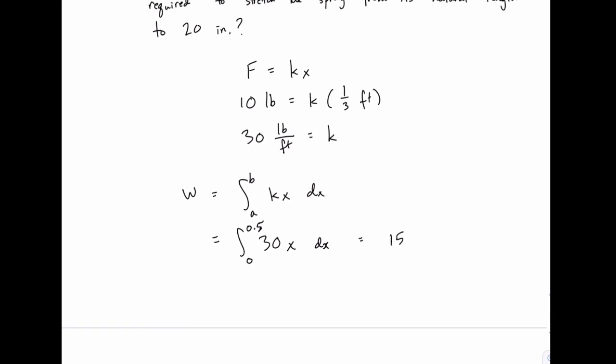Integrating gives us 15 x squared from 0 to 0.5, and then that would be 15 times 0.5 squared minus 15 times 0 squared, which works out to 3.75, and the units would be pound feet.